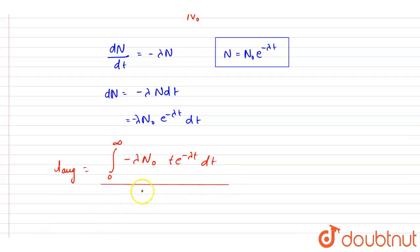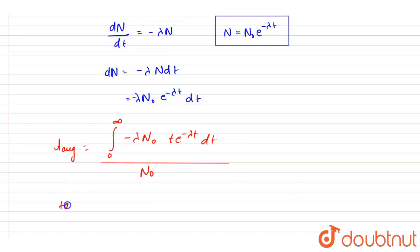After integrating this expression, you will get the average t equals 1/λ. This N₀ will get canceled out, and if you integrate it and put the limit, you will get this.